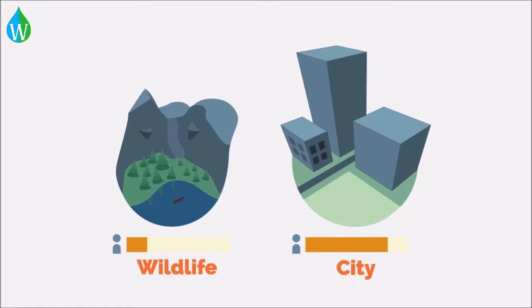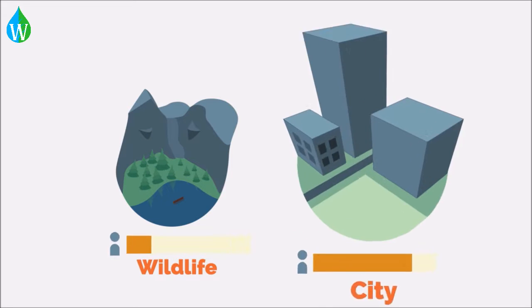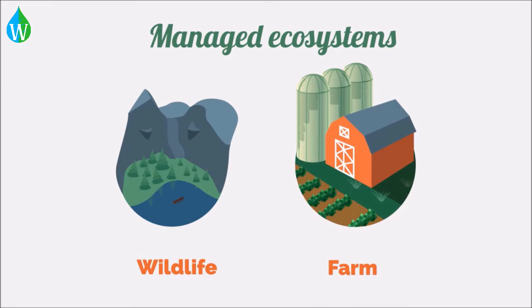Wild ecosystems are mostly free of man's influence and tend to be places like old growth forests and wildlife preserves. In contrast, managed ecosystems are actively modified by humans, like parks in the middle of a city and farms.